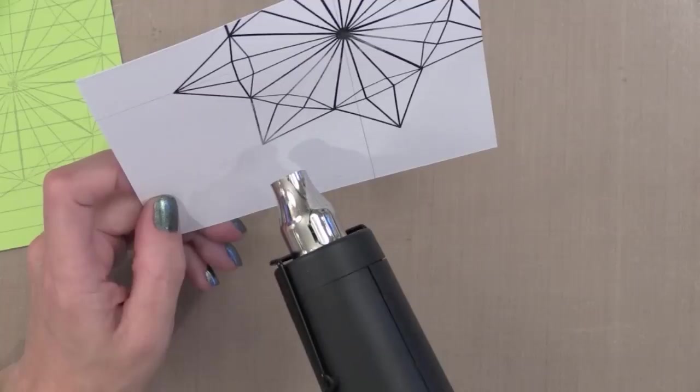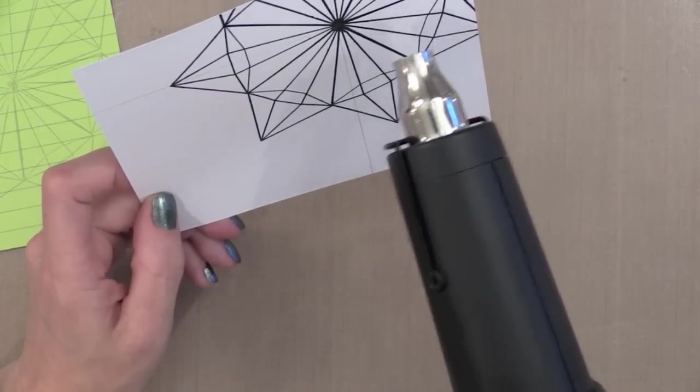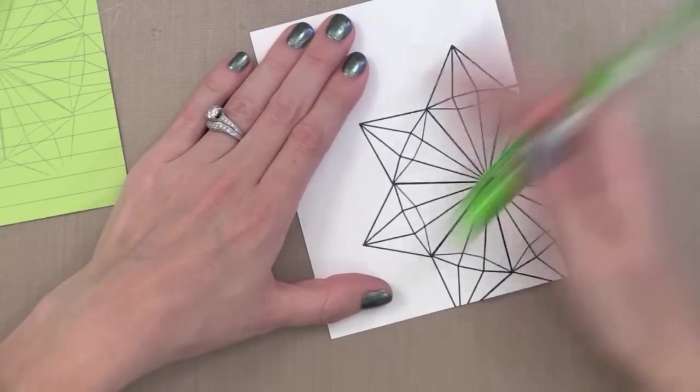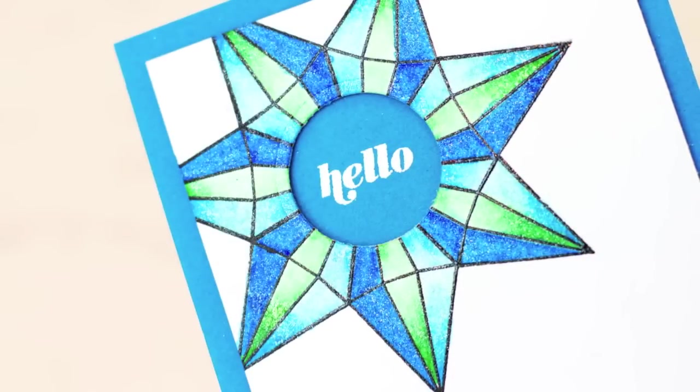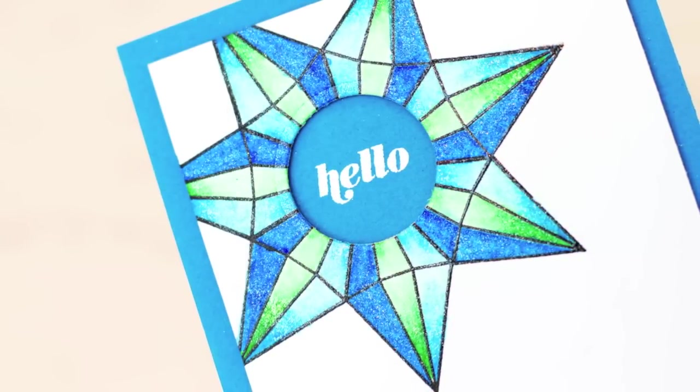I love how we took those shapes from that holiday ornament set and gave it a completely different look that we could use throughout the year. Again I'm going to go ahead and erase this. By the way I recommend getting a good mechanical pencil with a nice lead and eraser for techniques like this. So now that we've formed all of our flowers and stars let's go ahead and add the color.